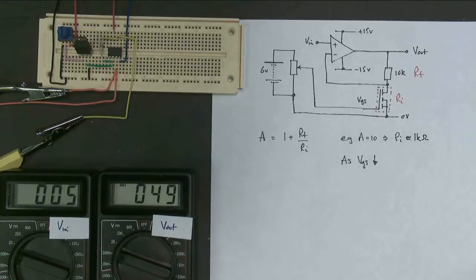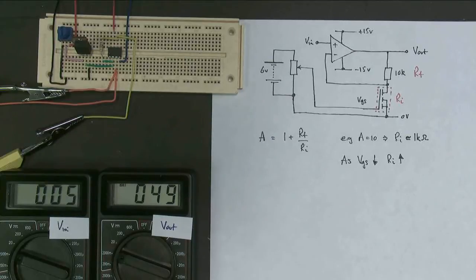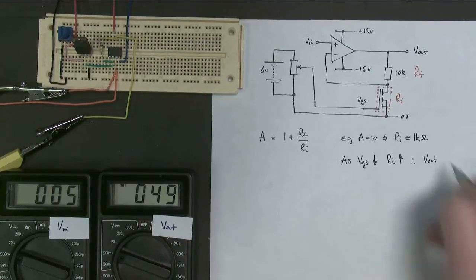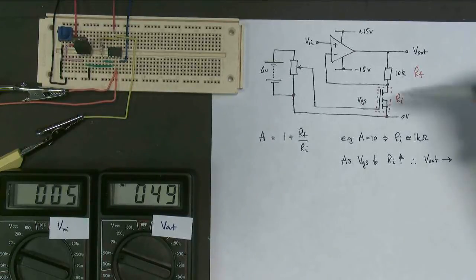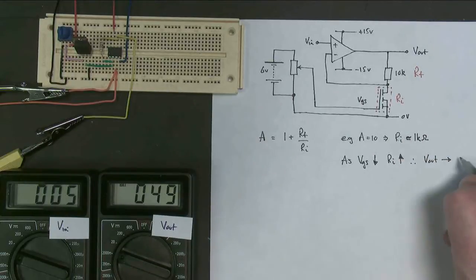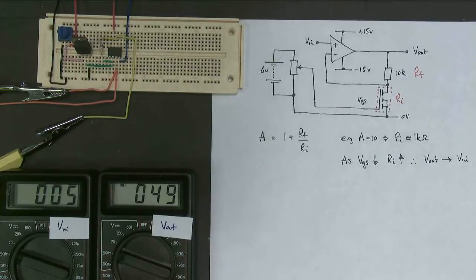So as the gate source voltage goes down, RI tends to go up, becomes very, very large, and therefore Vout tends to become... Well, when this is very, very large, this number is very small, so the gain is 1, so the output just becomes the input. So that's what they tend to become. Let's have a look at that.